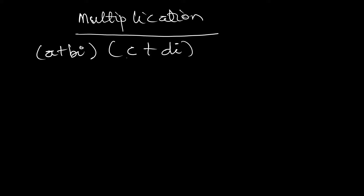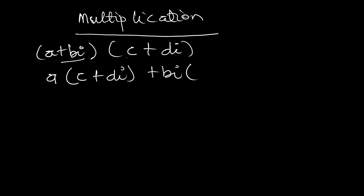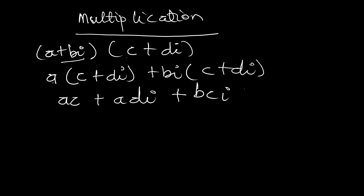We take a and multiply it by everything in the bracket, then we take the bi part and multiply it by everything too. So a multiplies everything in the bracket: a multiplying c plus di, then positive bi also multiplying c plus di. Simplifying, we get ac plus adi, because a multiplying c is ac and a multiplying di is adi, plus bi multiplying c gives bci, and bi multiplying di gives bdi squared.